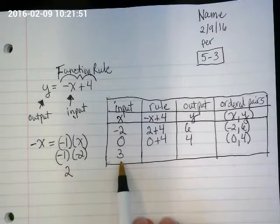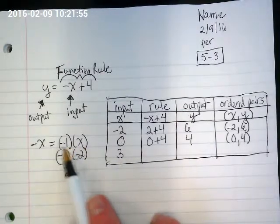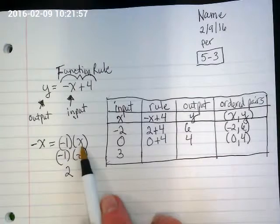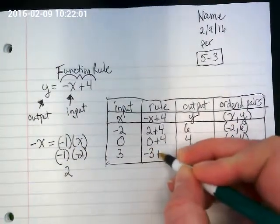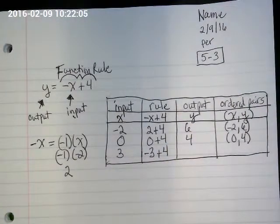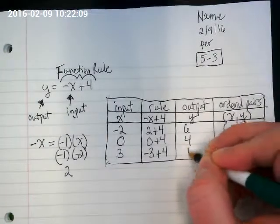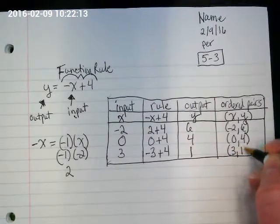And now I have a positive 3 going into that negative x. That would be negative 1 times positive 3 is going to give us negative 3 plus 4. And now I have to think number line. What is negative 3 plus 4? 1. And I get my ordered pair as 3 comma 1.